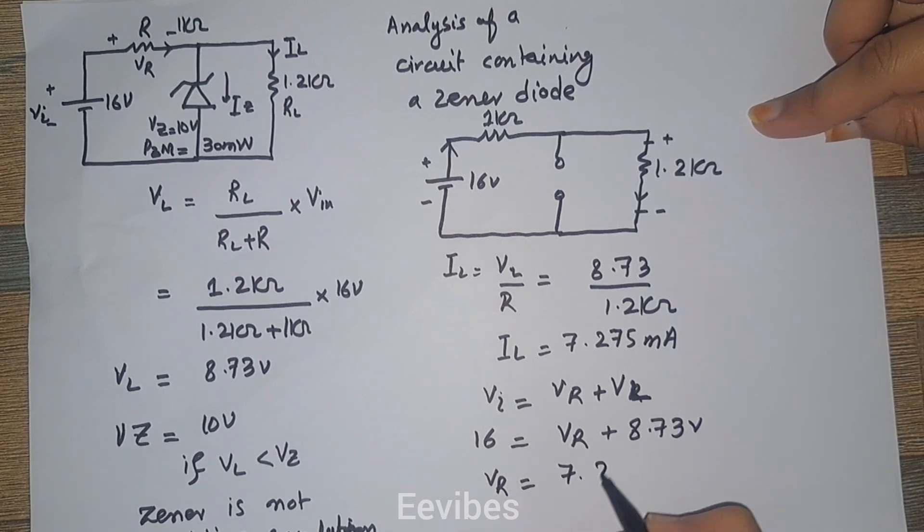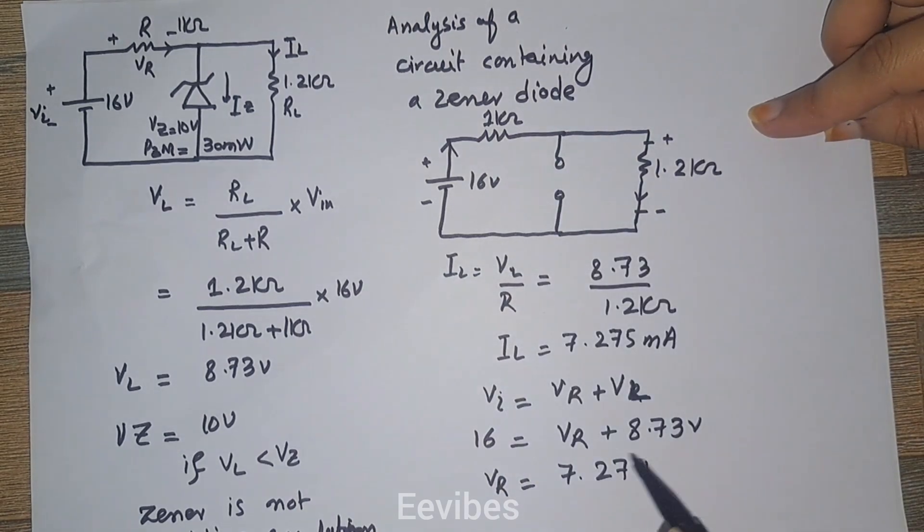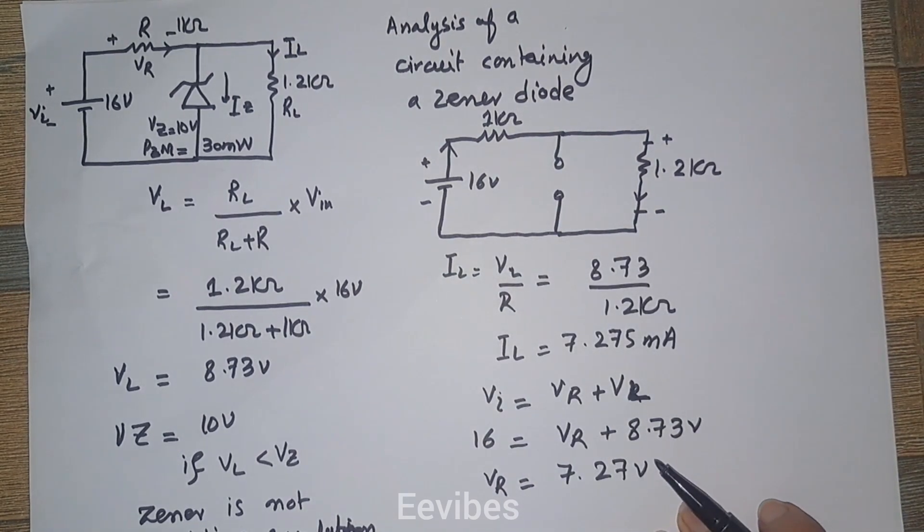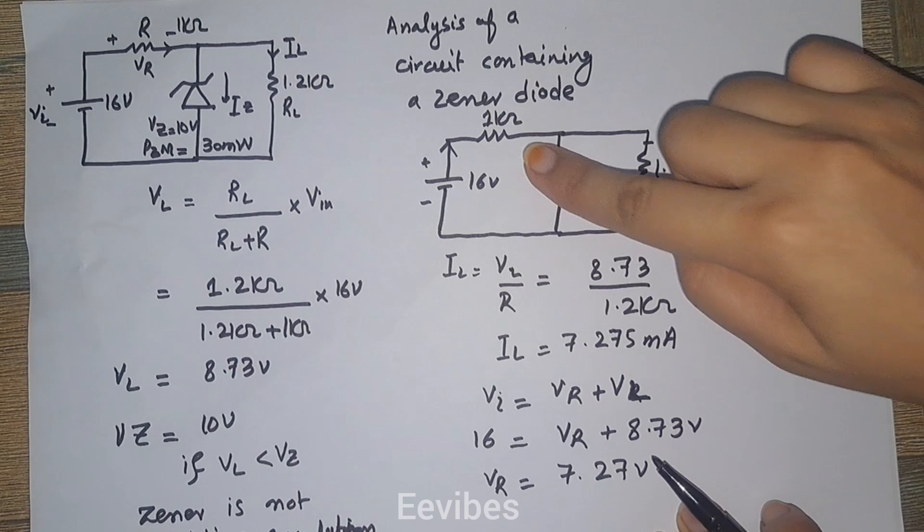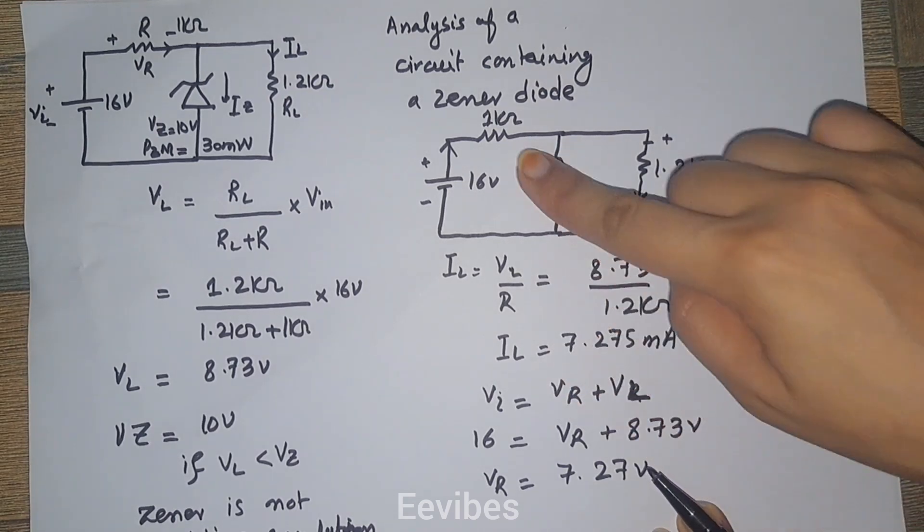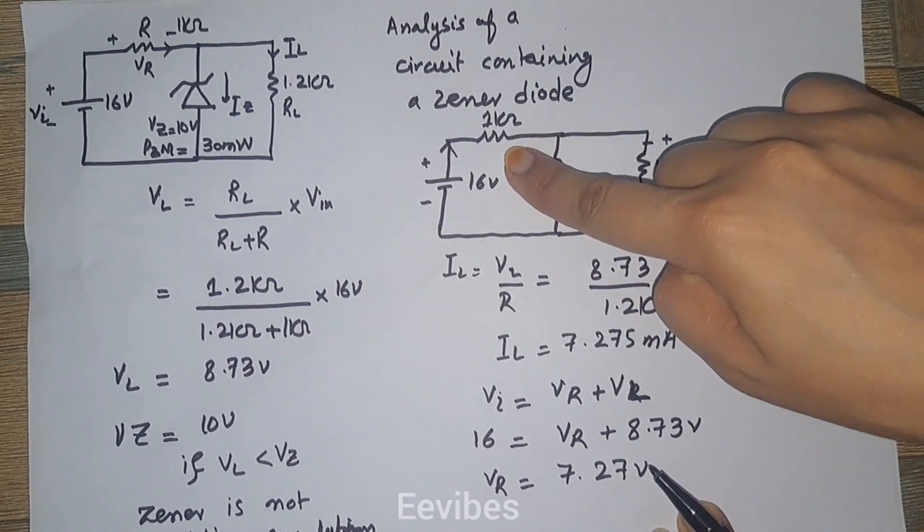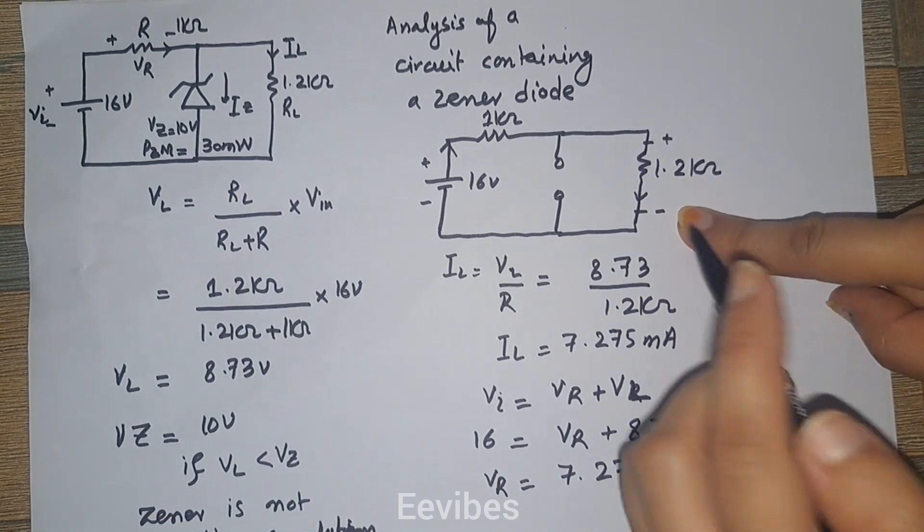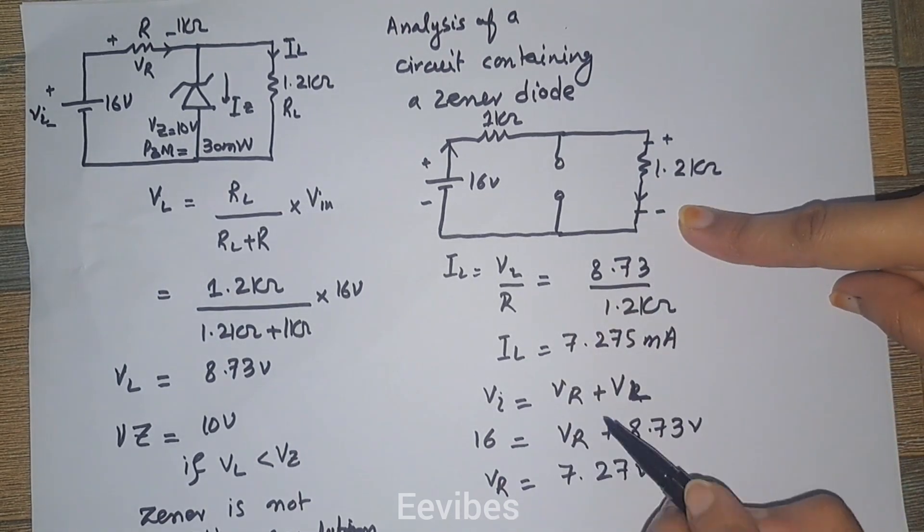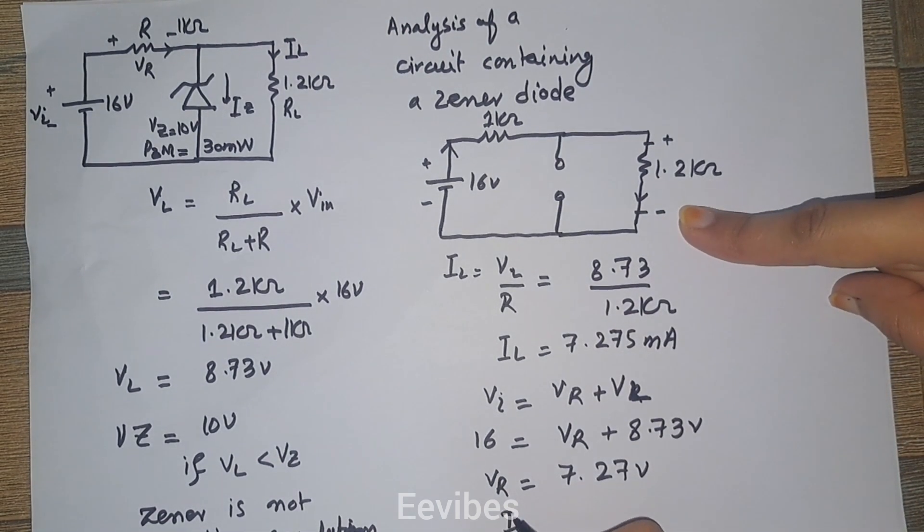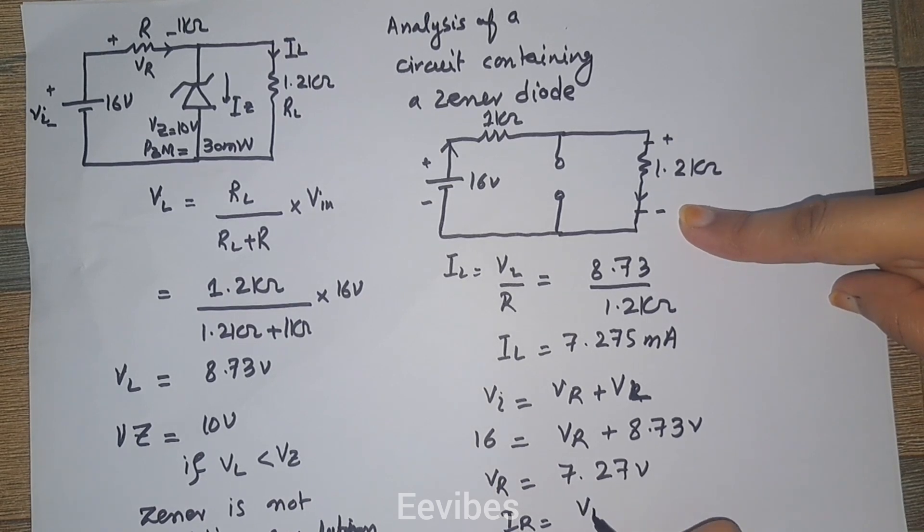Now let's determine the value of this current. You can verify this current will be the same as the current determined across the load resistor by using the formula IR equals VR over R.